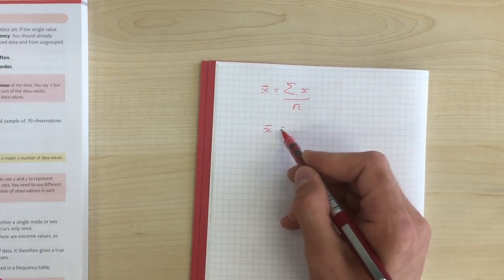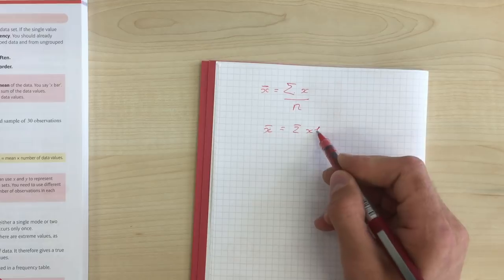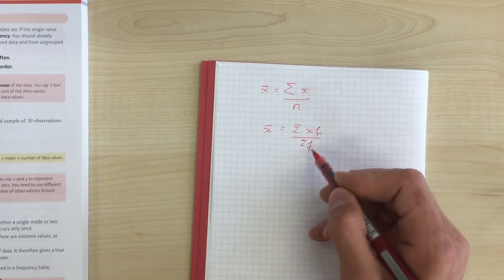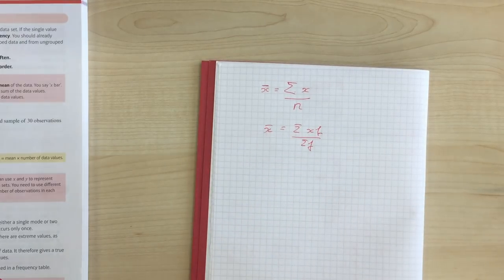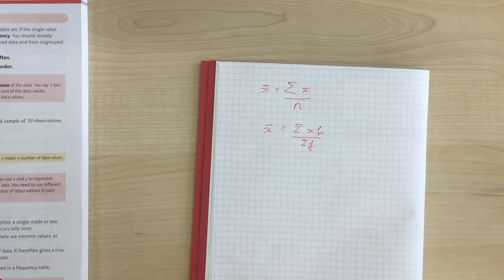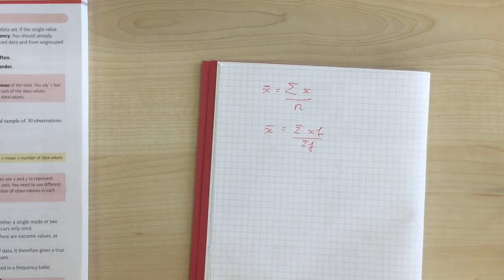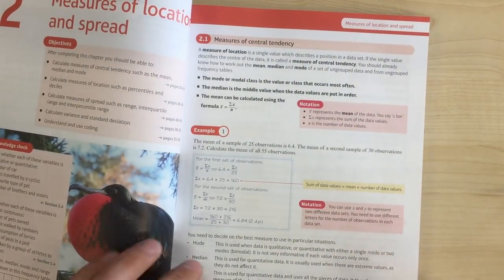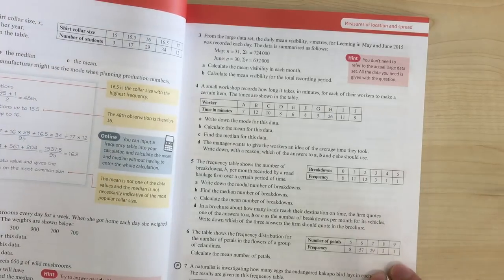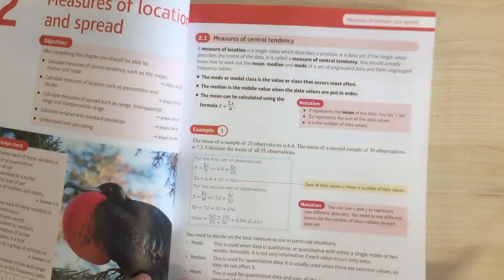And we should be familiar with this one as well. Sigma x times f divided by sigma f. If you've got a frequency table, total of the f times x column divided by total of the f column. And there are advantages and disadvantages of mean and median and mode. And all of those are quite nicely covered in the textbook. So have a read through. I'm not going to repeat that stuff here.